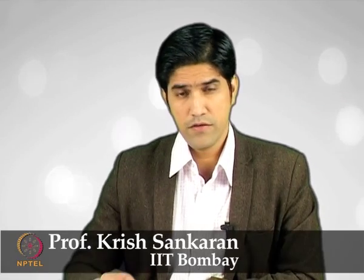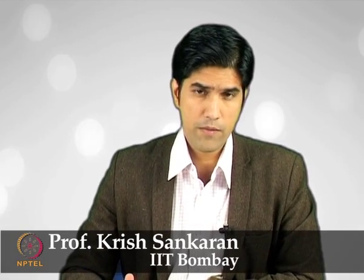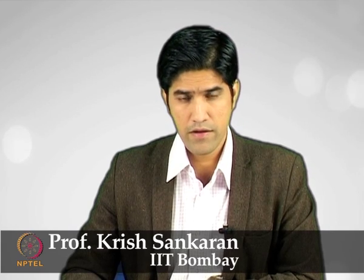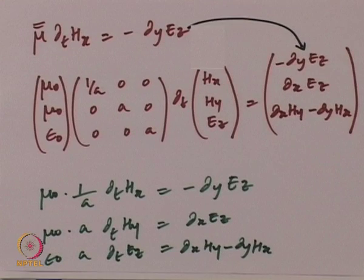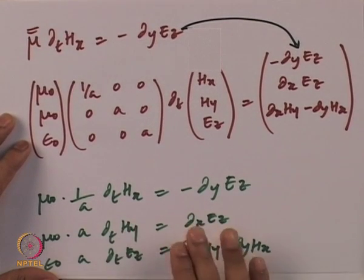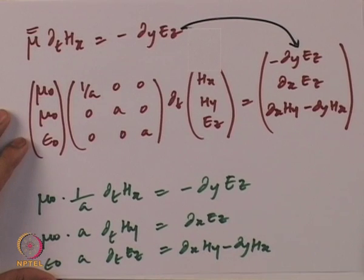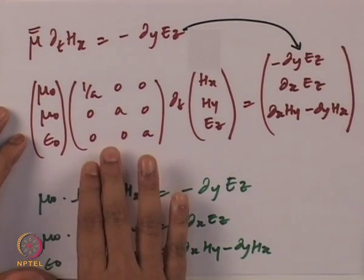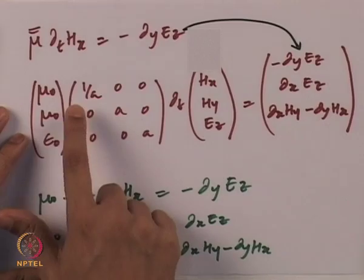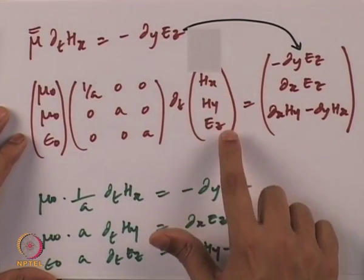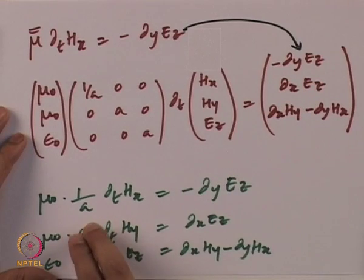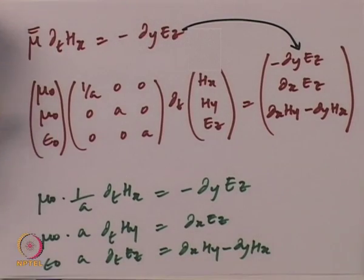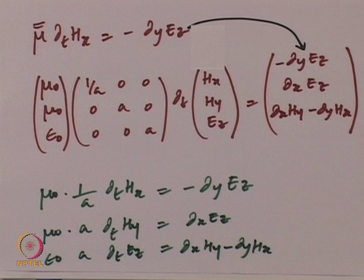Welcome back. We started with the Maxwell equation inside an anisotropic model and came to the point of deriving the first step of the PML equation. We are now in the process of deriving step by step the three field equations from the two curl equations. We started with the permittivity model which is anisotropic in the x-direction and cast it onto standard Maxwell equation terms.